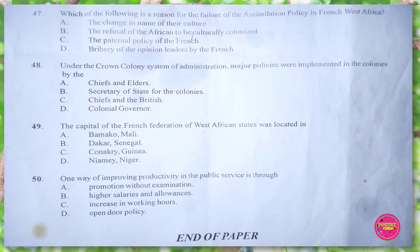Question 47. Which of the following is a reason for the failure of the assimilation policy in French West Africa? A. they changed the name of their culture, B. the refusal of Africans to be culturally colonized, C. the paternal policy of the French, D. bribery of the opinion leaders by the French. The correct answer is B. the refusal of Africans to be culturally colonized.